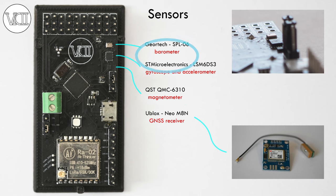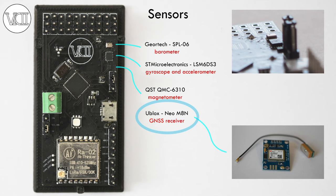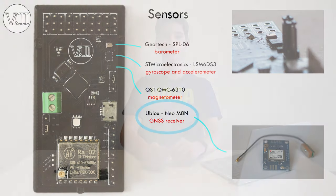We also have a barometer that gets us air pressure. We use it to determine the computer's height in relation to sea level. In addition to those, we also have a GNSS receiver that uses navigational satellites to closely predict the computer's location and velocity.